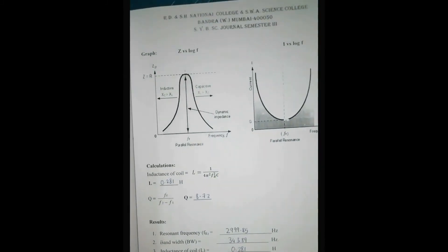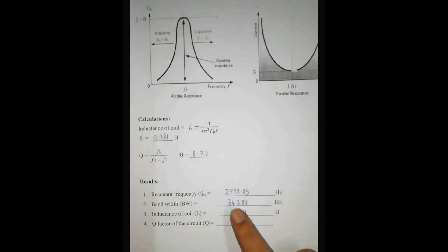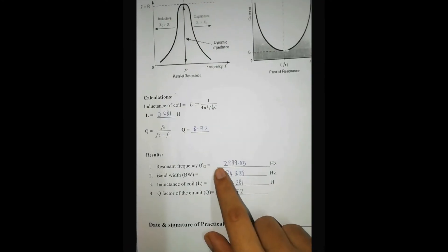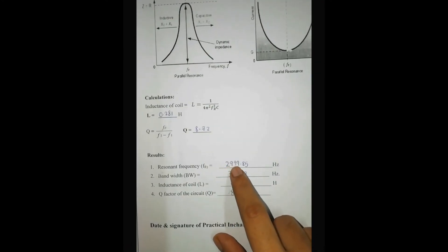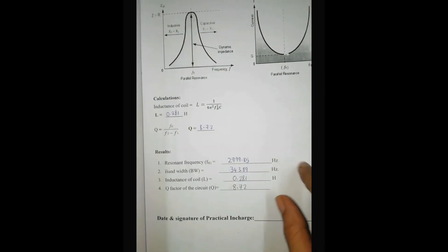So 3 kHz is the resonant frequency. Here is the graph, and the result confirms that the resonant frequency is 299.85 Hz — that is, approximately 3 kHz.